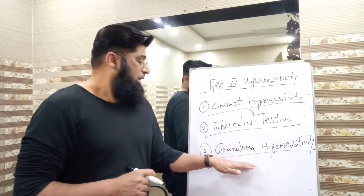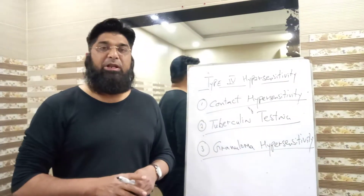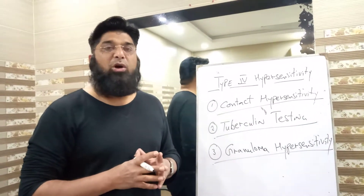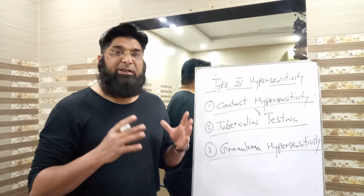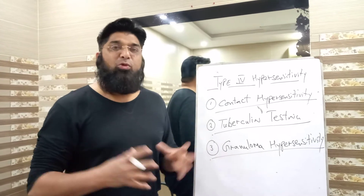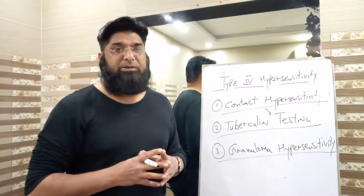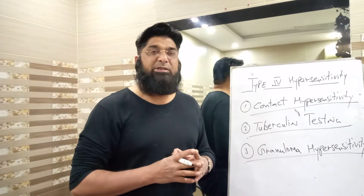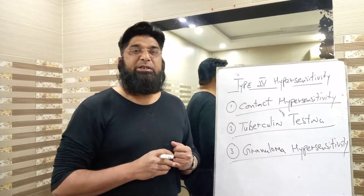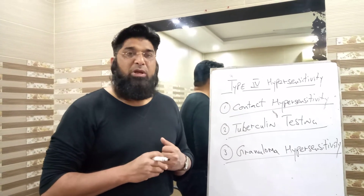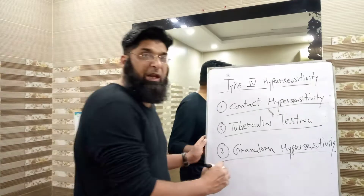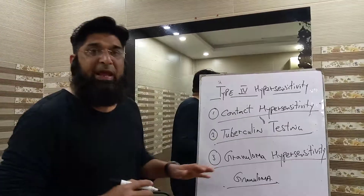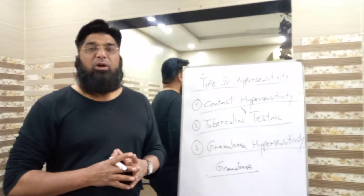In this mode of presentation of type 4 hypersensitivity reaction, macrophages are transformed into giant cells called epithelioid cells. These epithelioid cells fuse together to form Langhans-type giant cells. The combination of these Langhans-type giant cells along with lymphocytes, fibroblasts, and connective tissue is called a granuloma. This granuloma is the hallmark of tuberculosis.